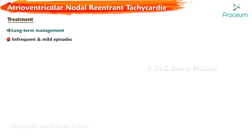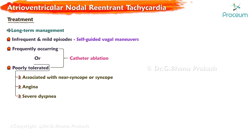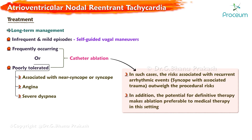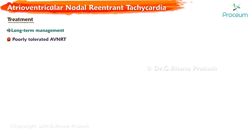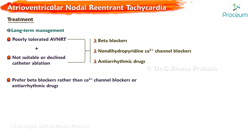Long-term management: infrequent and mild episodes may be managed with self-guided vagal maneuvers. For patients with frequently occurring or poorly tolerated episodes, such as those associated with near syncope, syncope, angina, or severe dyspnea, guidelines recommend catheter ablation rather than chronic medical therapy as the initial long-term management strategy, as the risk of recurrent arrhythmic events outweighs the procedural risk. For patients who are not candidates for or who have declined catheter ablation, chronic medical therapy using beta blockers, non-dihydropyridine calcium channel blockers, or antiarrhythmic drugs can be initiated. Beta blockers are preferred over calcium channel blockers or antiarrhythmic drugs as the initial option for chronic medical therapy.